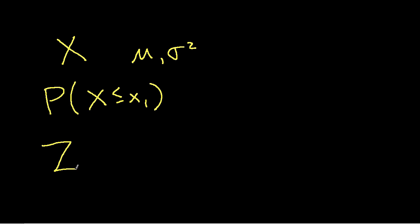We define a random variable Z and Z is our random variable X minus its mean divided by its standard deviation.